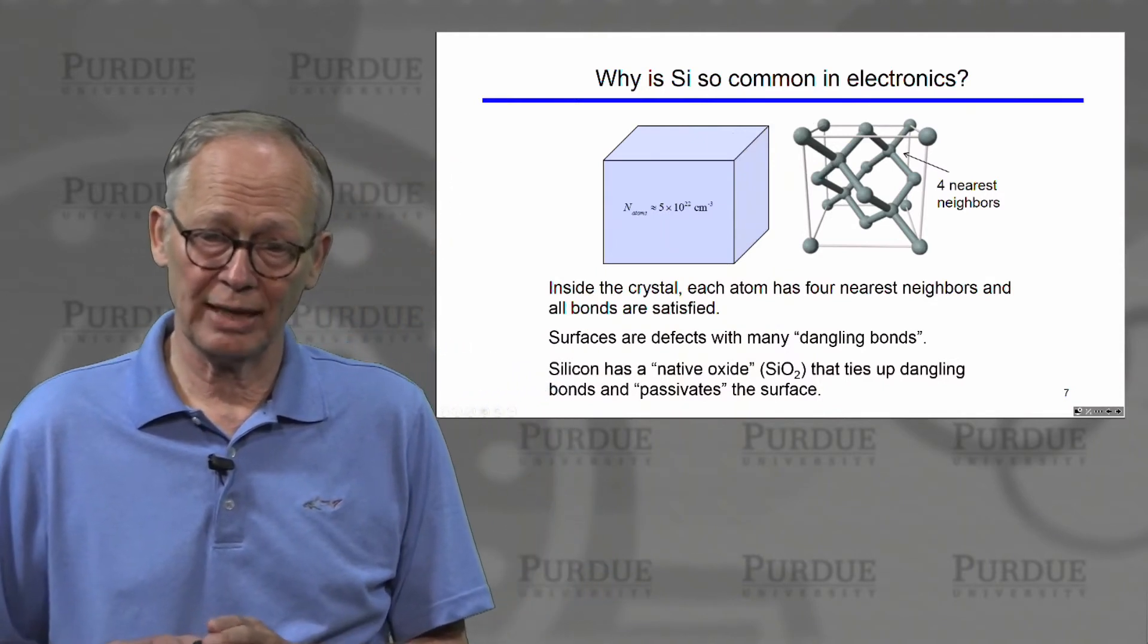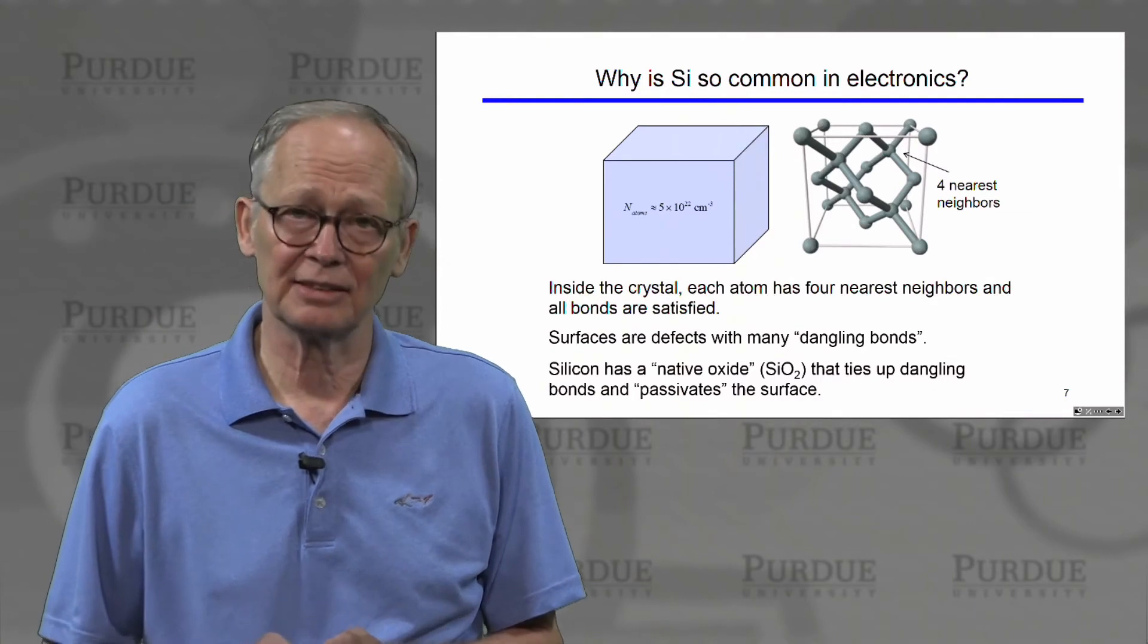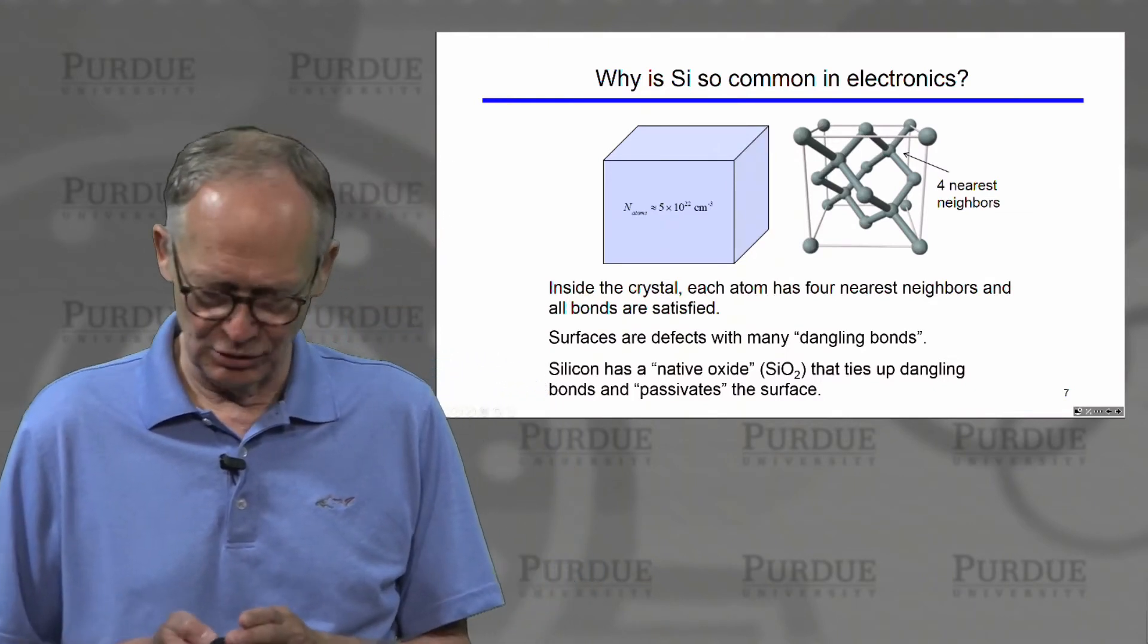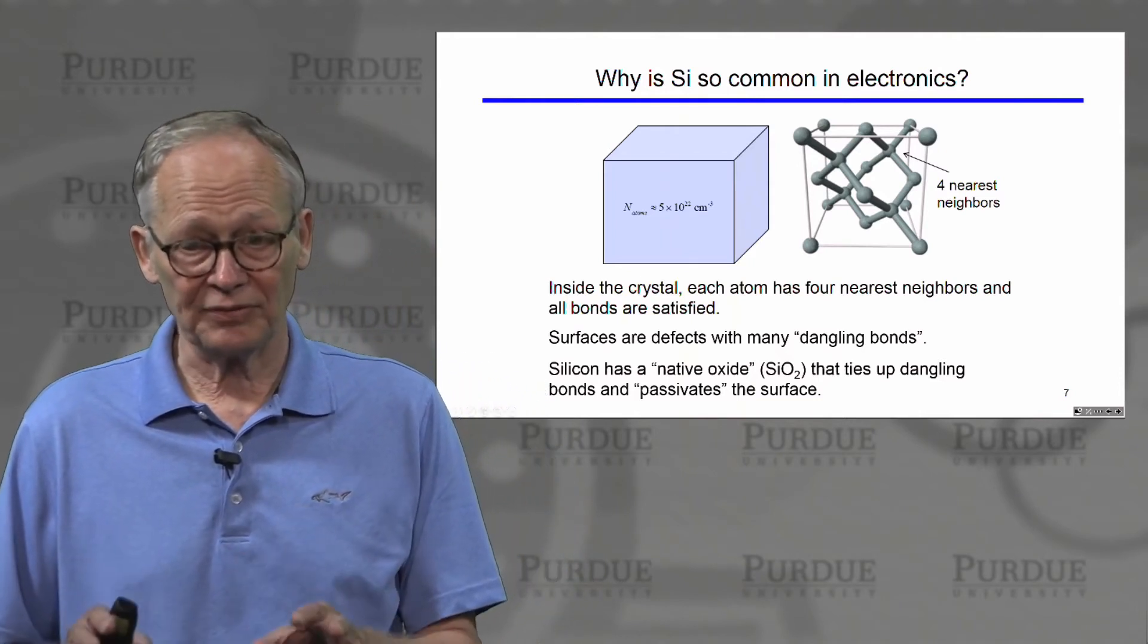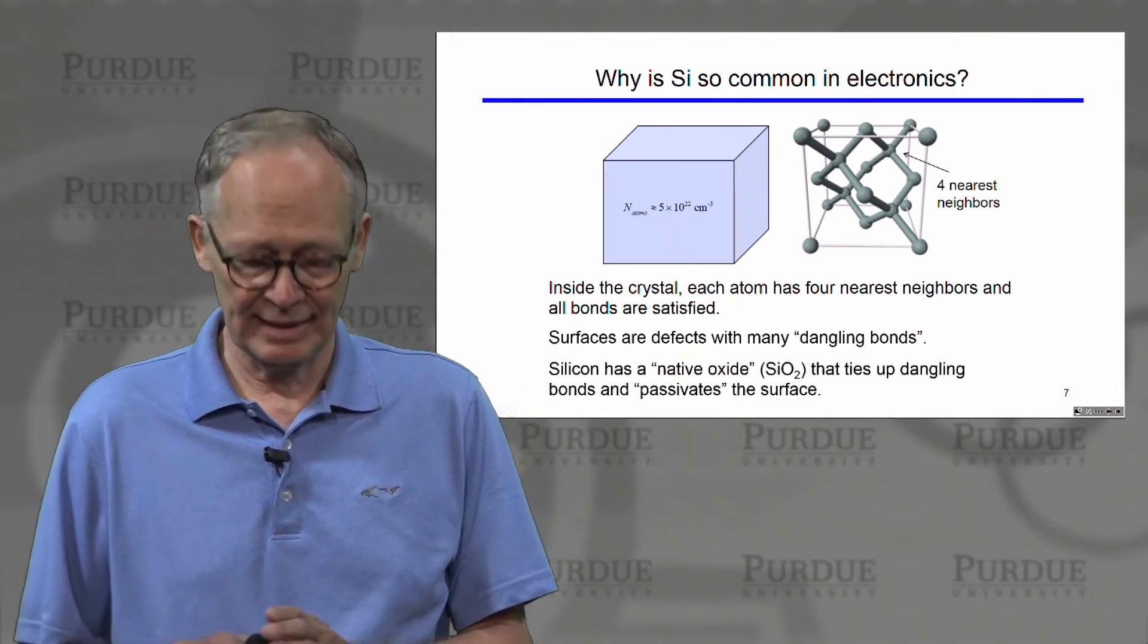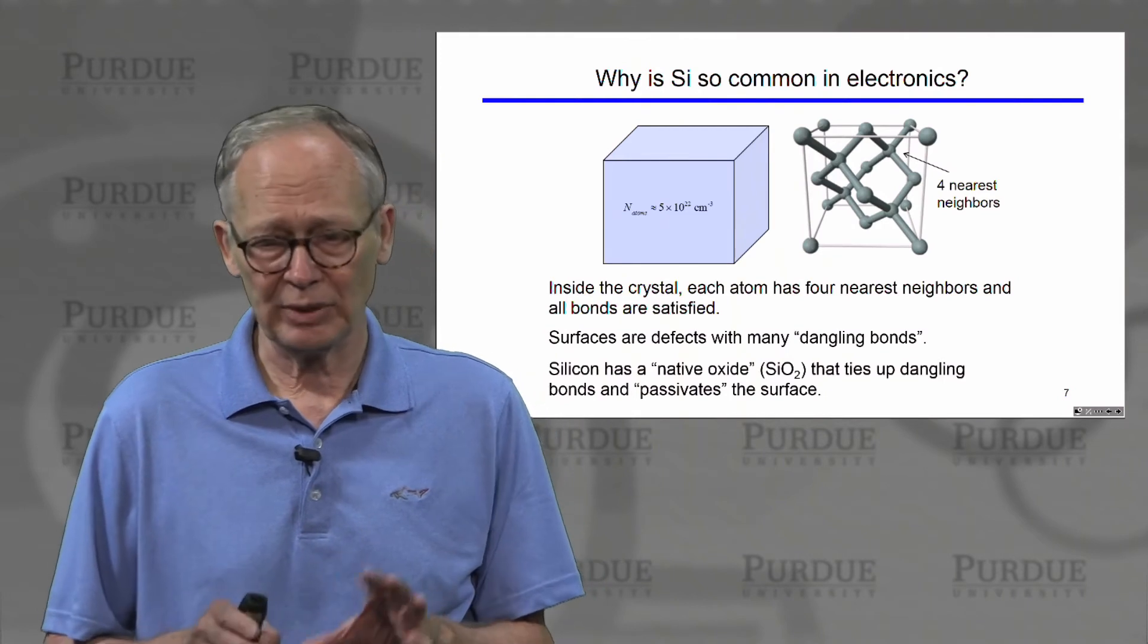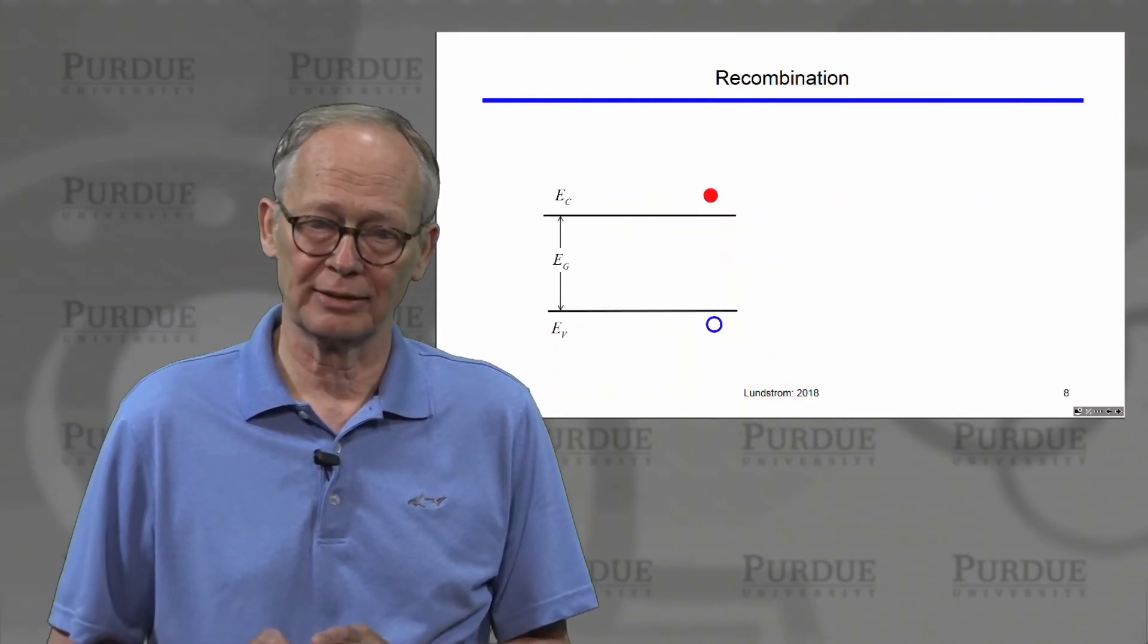Other semiconductors don't have that particularly nice property. And this is what's led to the widespread use, common use of silicon in so many different applications. There are specific applications for which silicon is just not suitable. And then we have to find other ways of building devices from other semiconductors.